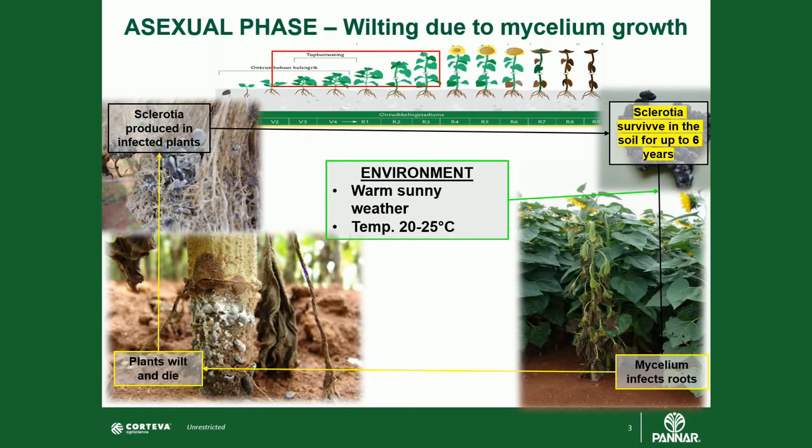Sclerotinia root rot can be identified as one or a few individual plants that quickly die overnight due to the root system being compromised. Fortunately, the plants desiccate quickly and the disease does not spread over a large area during the combine process.